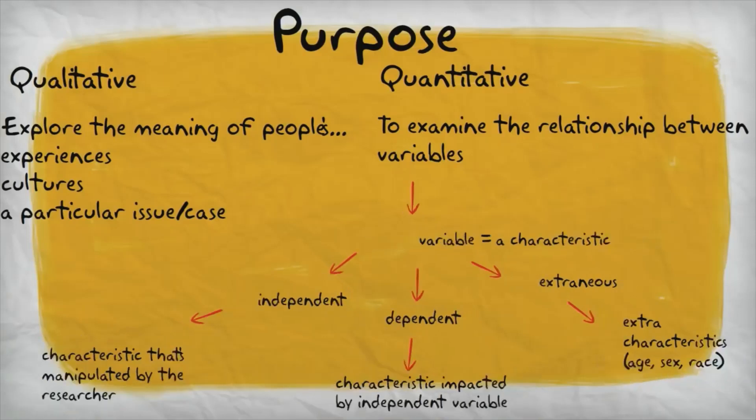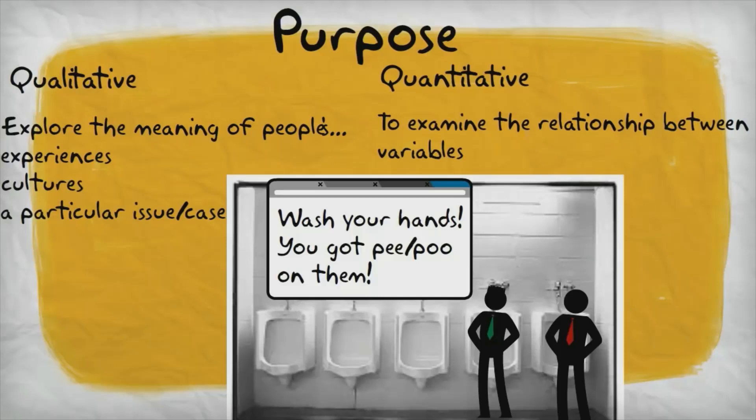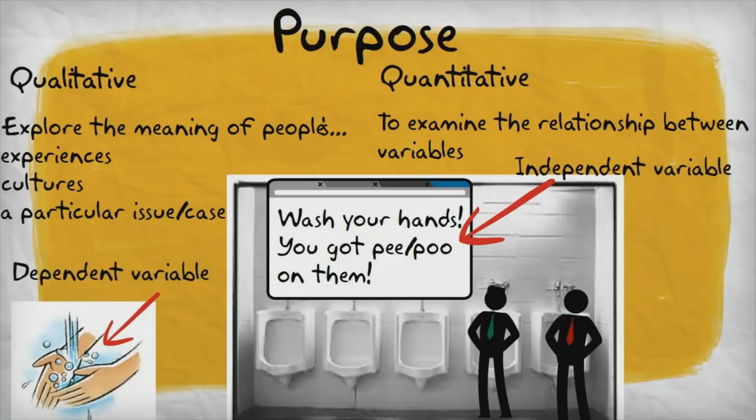So let's say a researcher makes a poster that says, hey, you probably got some of you or other people's pee or poop on your hands, so wash your hands. The researcher puts up that poster in one bathroom and doesn't put it in another bathroom. Then the researcher watches to see if more people wash their hands after using the bathroom who were exposed to the poster compared to those who were not. It turns out that more people washed their hands who went to the bathroom where the poster was. The independent variable in this study is the poster on the wall. It was manipulated by the researcher. The dependent variable was the characteristic of hand washing. It was the effect of there being or not being a poster in the bathroom.